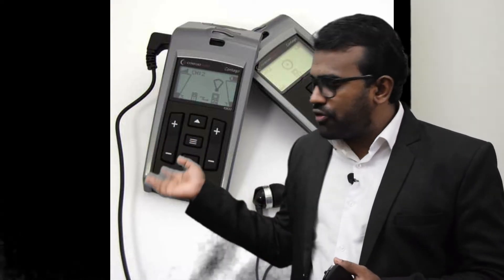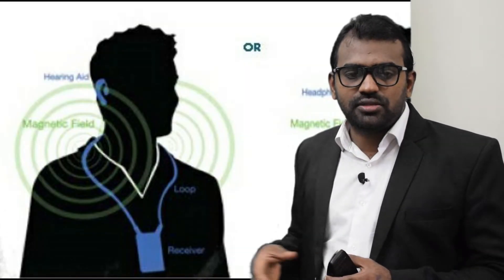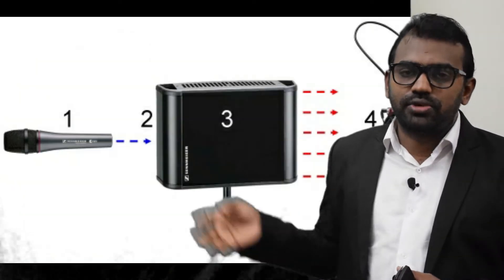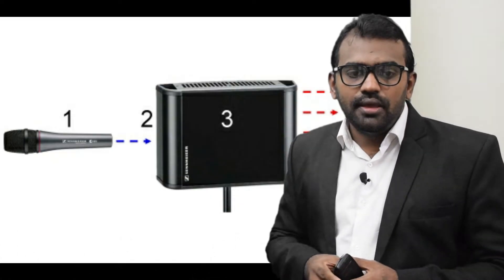What are the types of ALDs? ALDs utilize FM, infrared, or inductive loop technologies. All three technologies are considered good. Each one has advantages and disadvantages.